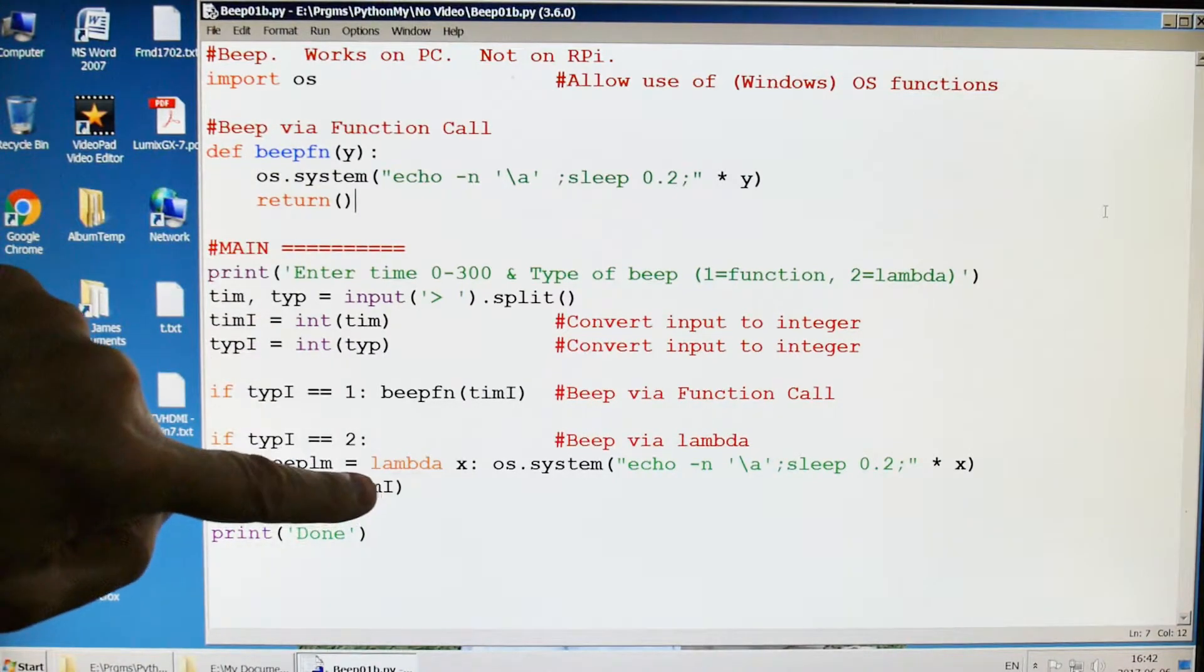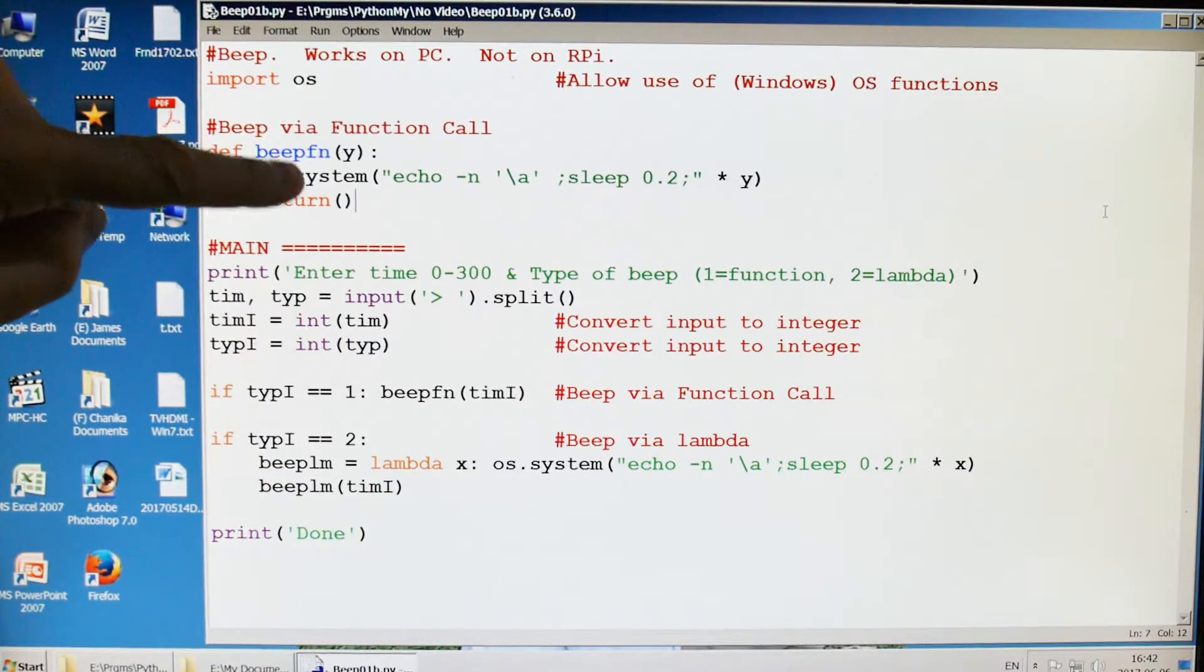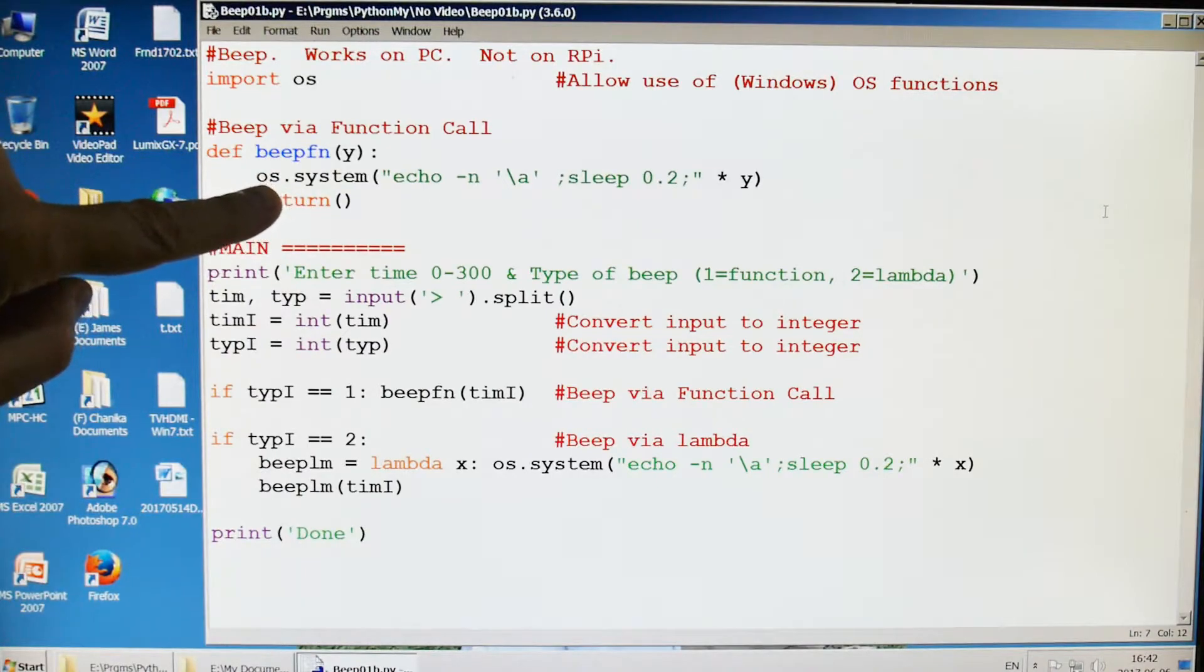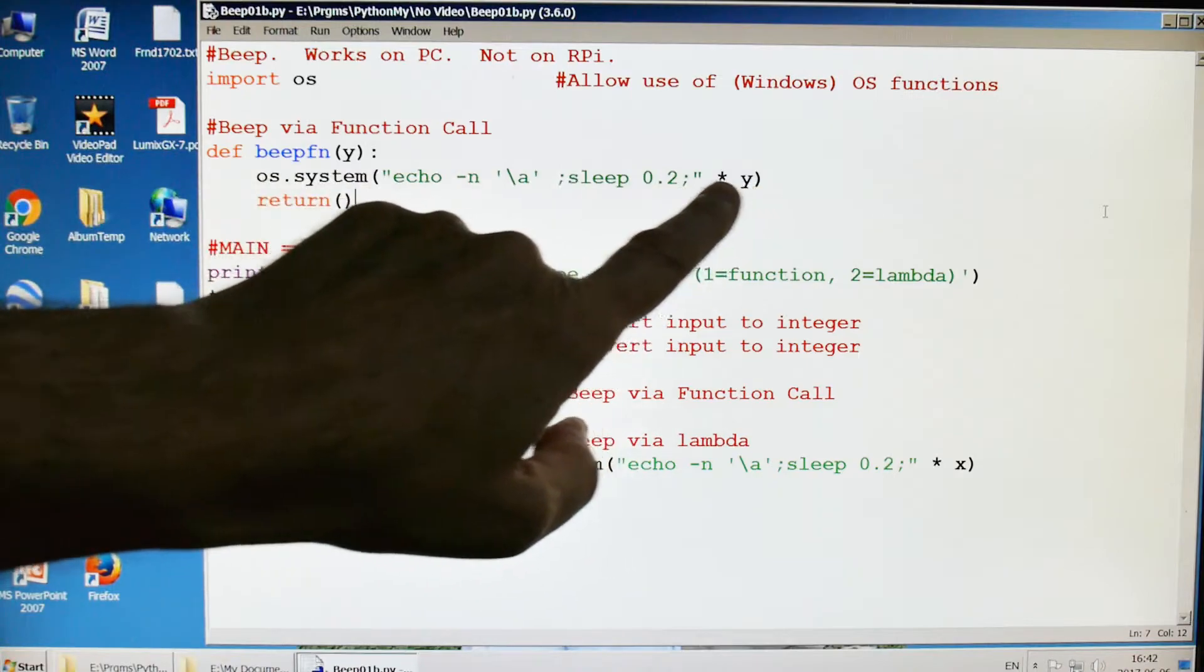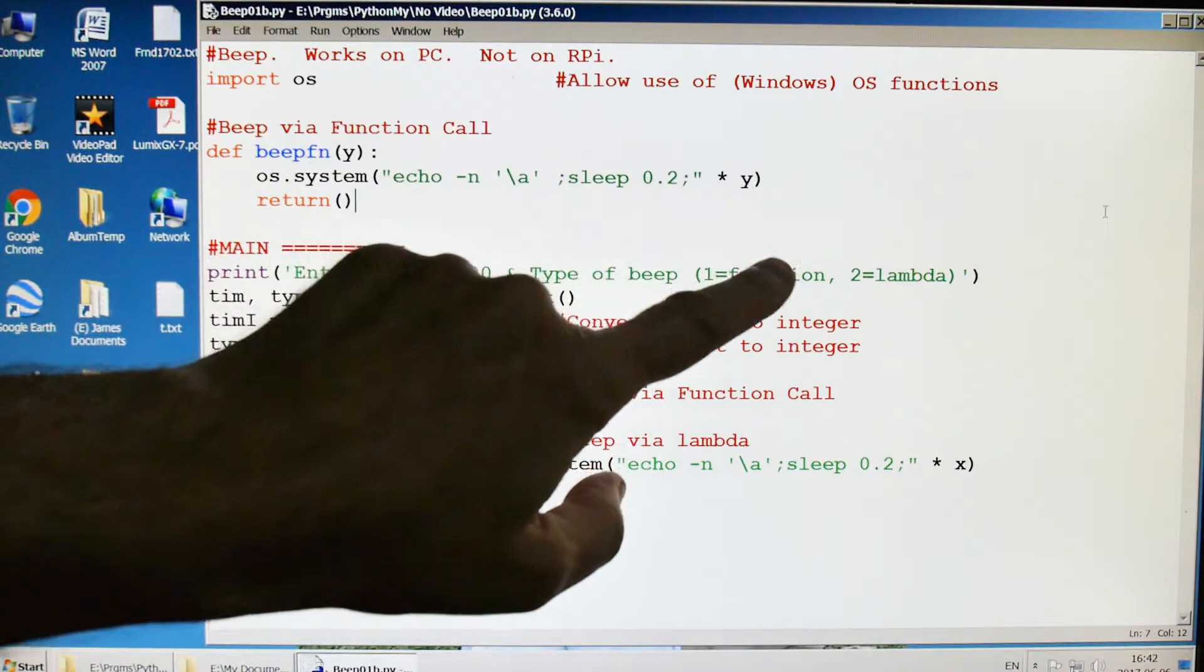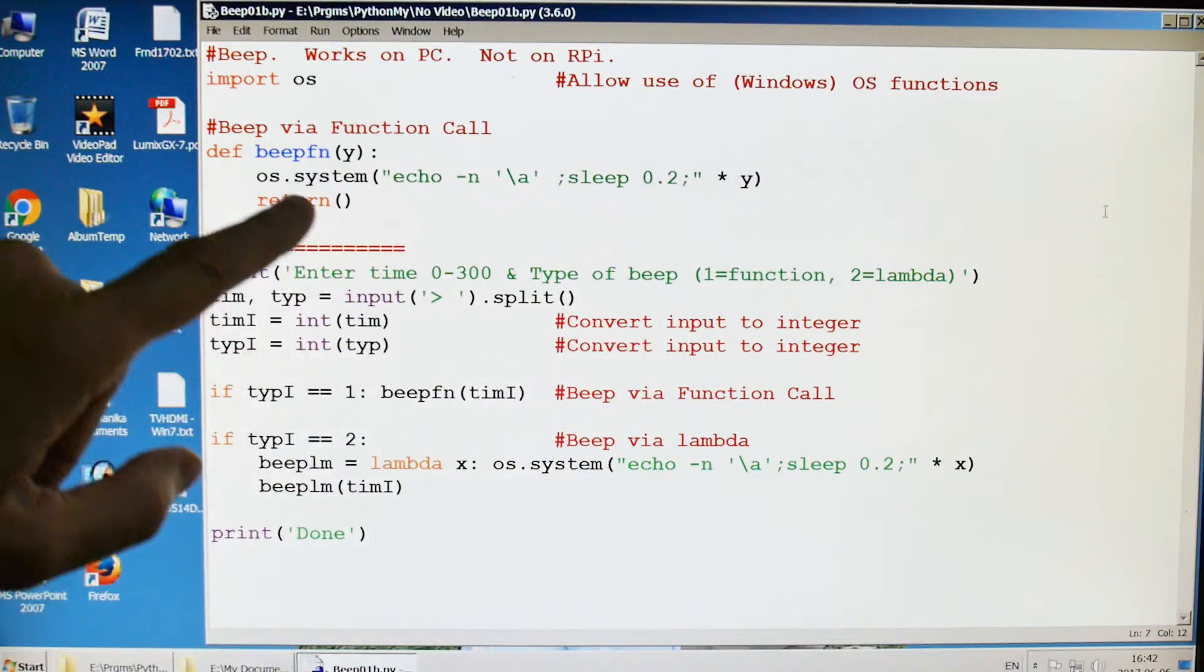We're going to use a function and then we're going to use a lambda. So the first one is we're going to define the function, and as you can see it's the os.system, and then this string is what's going to make the beep sound. The Y will allow us to make the beep shorter and longer, and then of course return statement.